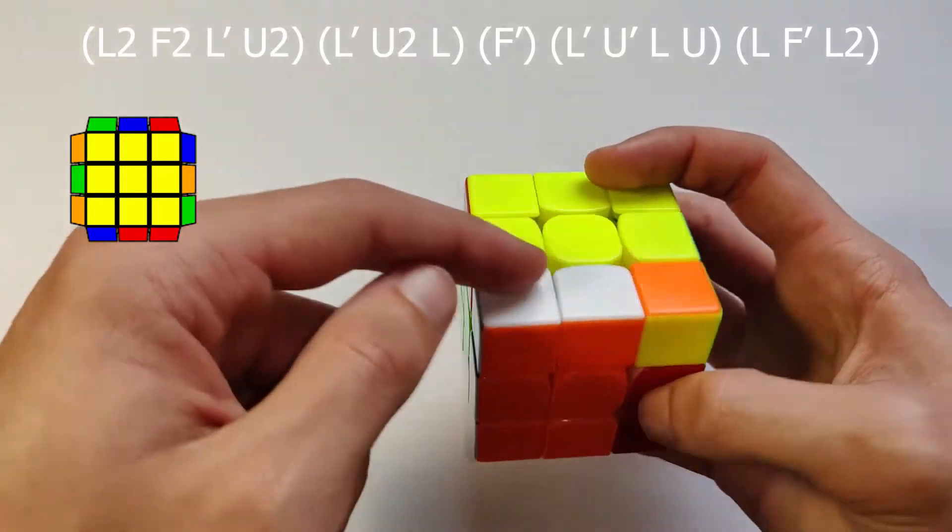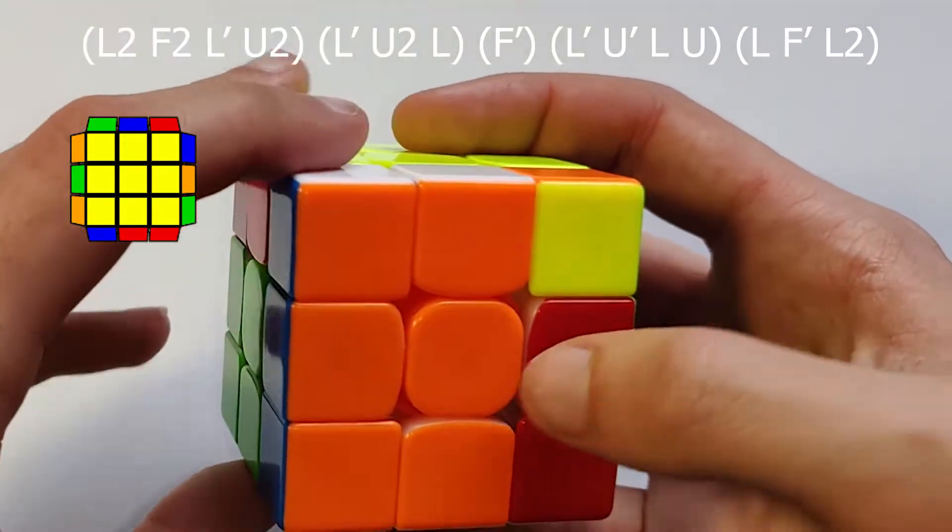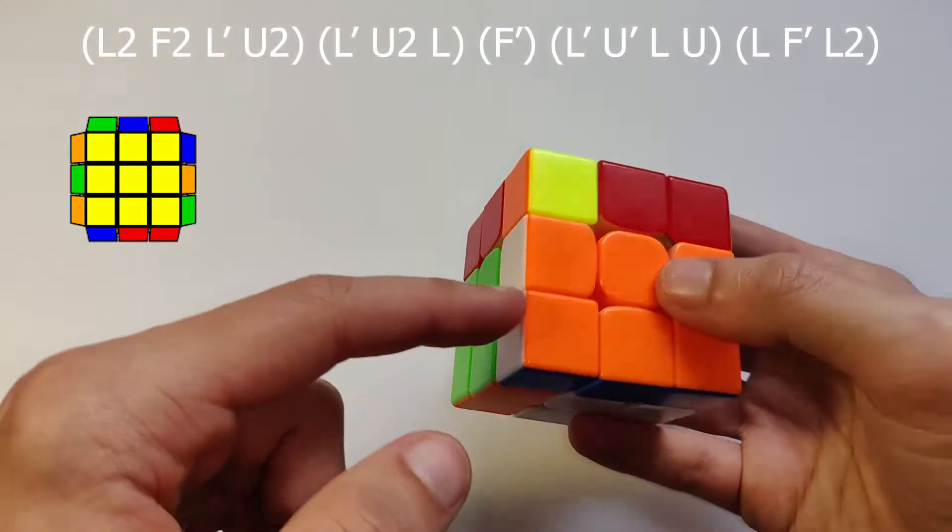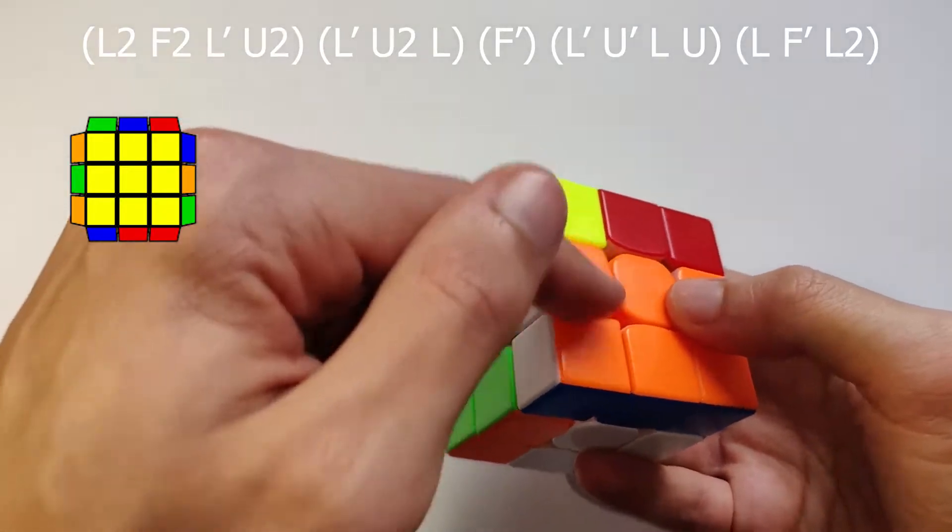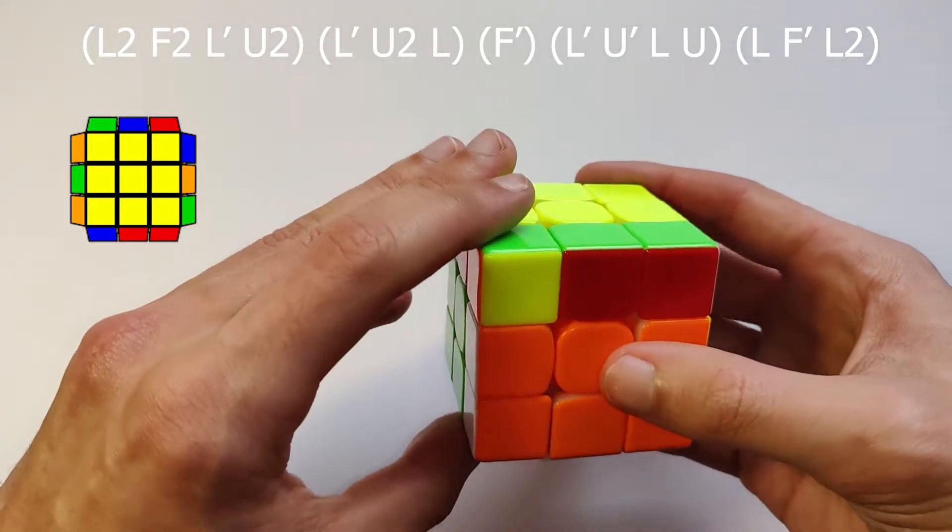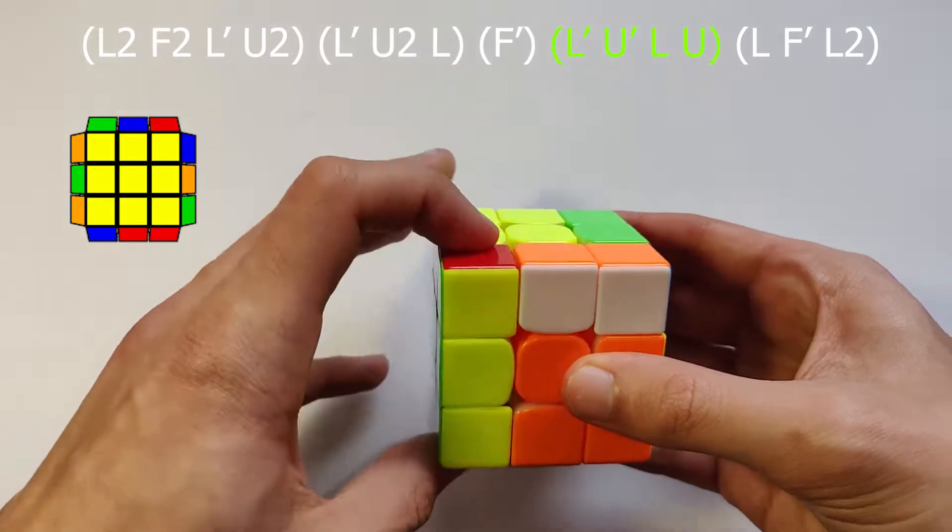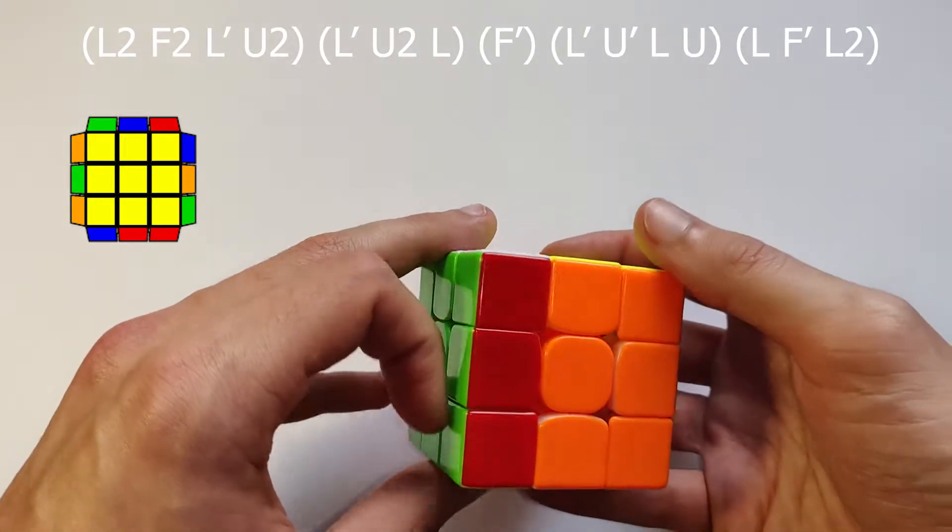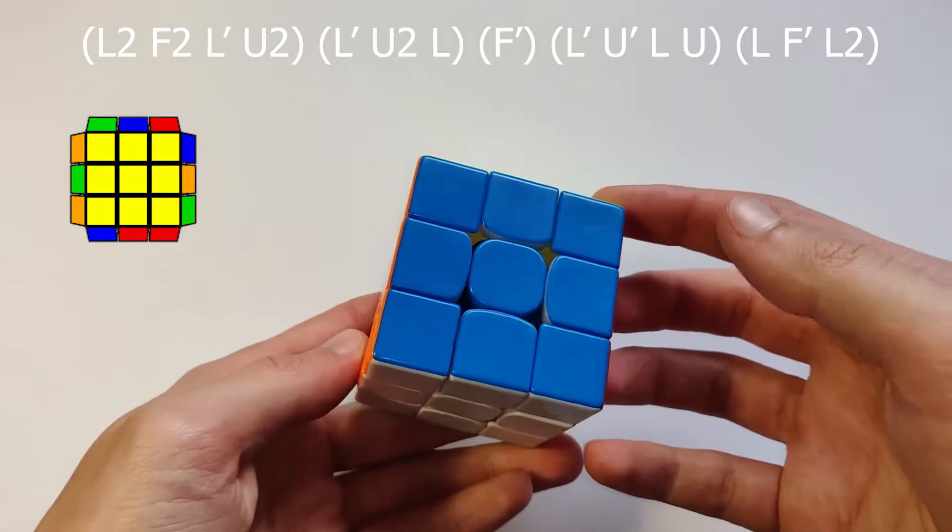And then what we're going to do is look at this as an F2L pair, this white, orange and blue piece. We're going to bring it out and then insert it just like that, and then it's done.